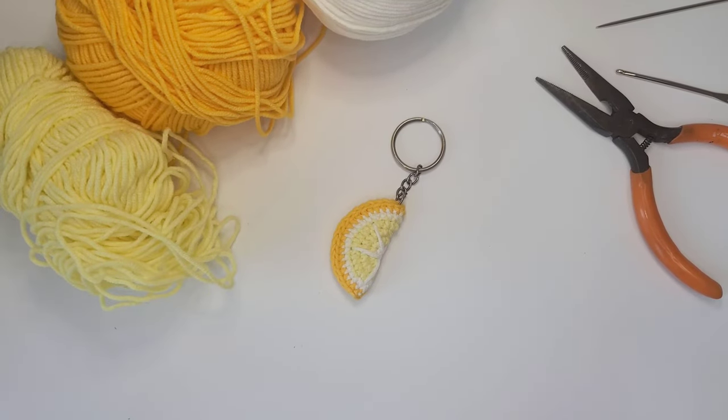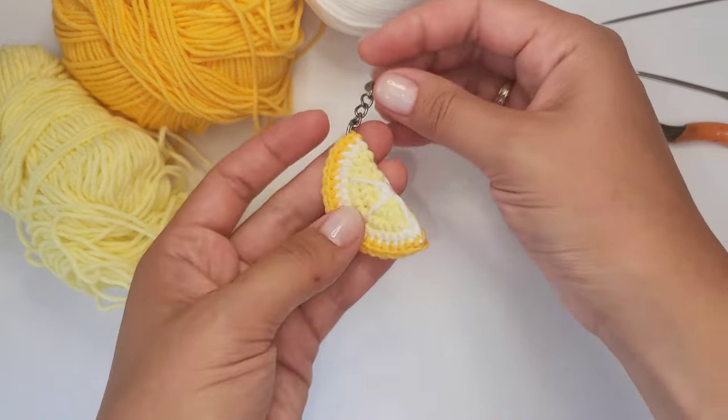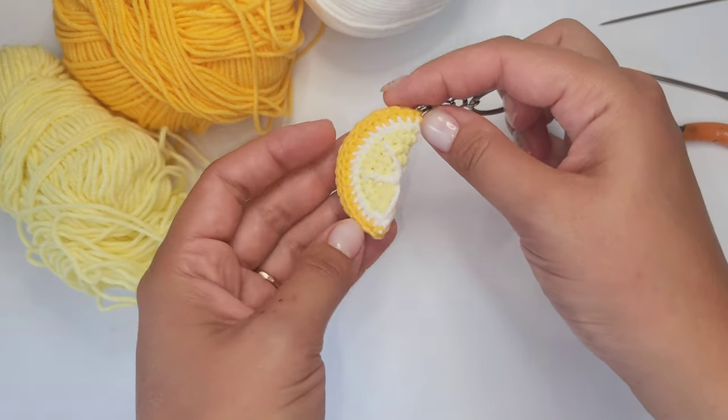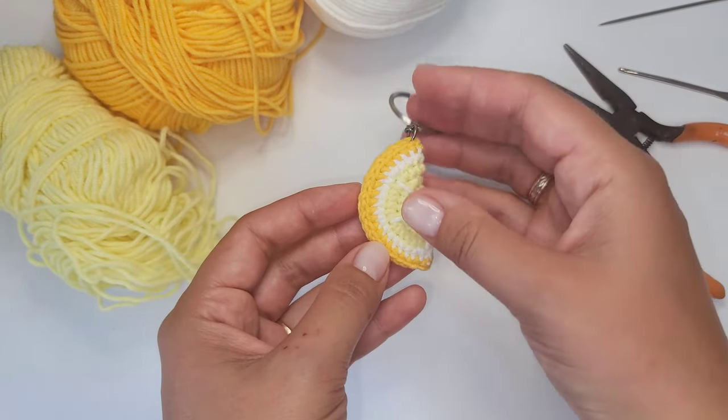Hello everyone! That's Diddy Toys channel and today we are going to crochet a lemon slice. You can use it as a separate item or decoration as well, but I'll show you how to make a keychain.